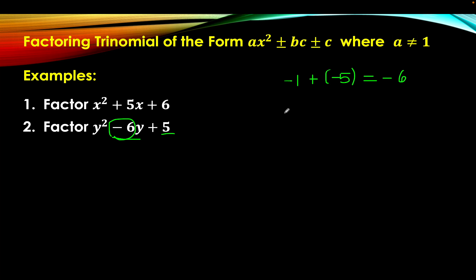Step 3: write the factor in the form. Note the variable is y, not x — so we must be careful not to copy the previous example's variable. The factors are the quantity y minus 1 times the quantity y minus 5.